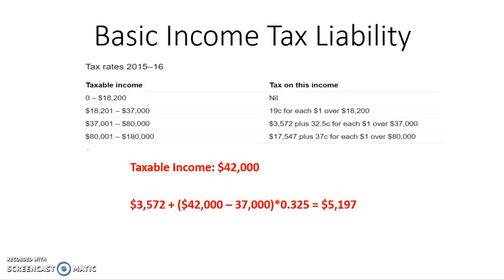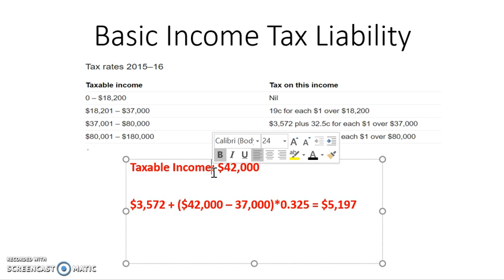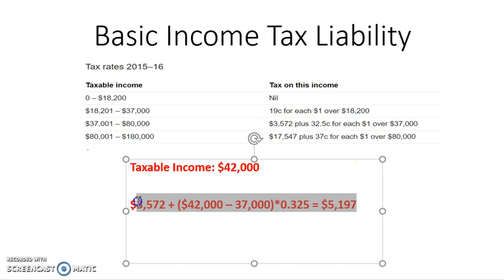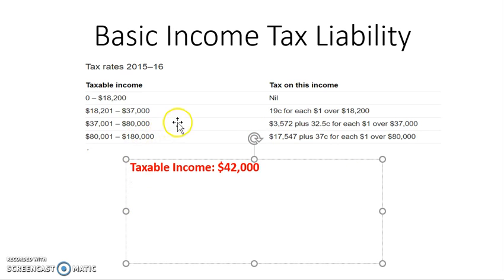After working out our taxable income, we need to work out our basic income tax liability. Our taxable income is $42,000, so we look at the tax brackets for 2015–16 as specified for the question. We can see that $42,000 falls into the bracket between $37,001 and $80,000. Looking at the column on the right, it tells us the tax on this income — we're going to have $3,572 of tax, plus $0.325 for each dollar over $37,000.